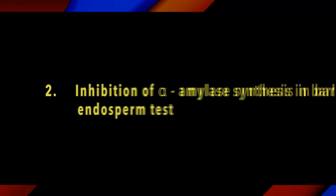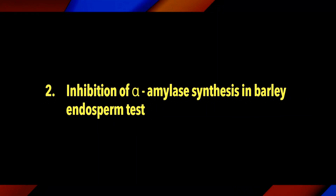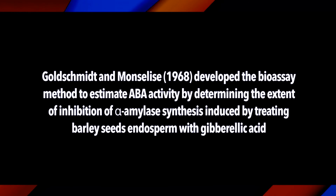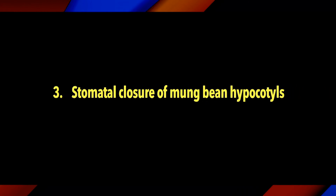The next section is the inhibition of alpha amylase synthesis in barley endosperm test. ABA inhibits the synthesis of alpha amylase in the aleurone layers, which is triggered by gibberellin. Goldschmidt and Monsalize in 1968 developed the bioassay method to estimate ABA activity by determining the extent of inhibition of alpha amylase synthesis induced by treating the barley seed endosperm with gibberellic acid.